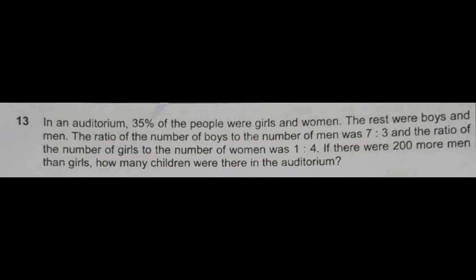This is on percentage and ratio. In an auditorium, 35 percent of the people were girls and women. The rest were boys and men. The ratio of the number of boys to the number of men was 7:3, and the ratio of the number of girls to the number of women was 1:4.